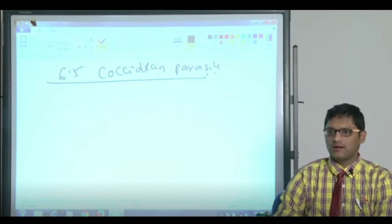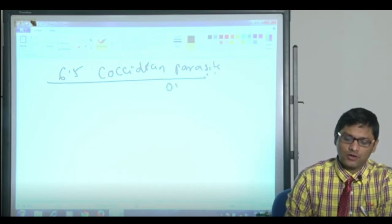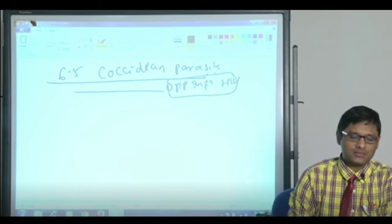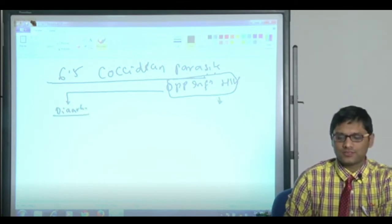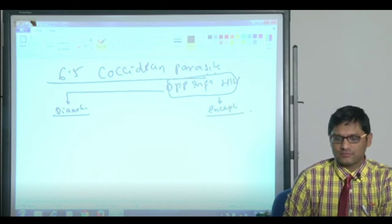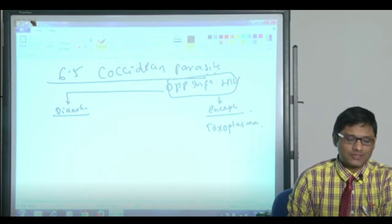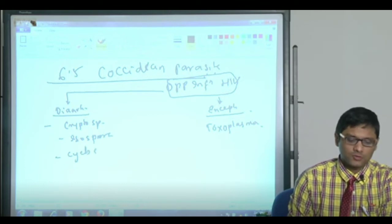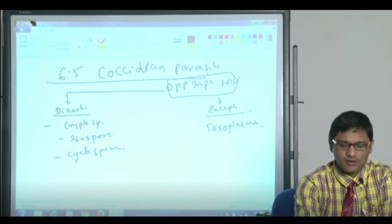There are four important members under this, and all these members are known to produce opportunistic infection in HIV patients. Among these, three members cause opportunistic diarrhea, whereas one causes opportunistic encephalitis infection. Opportunistic encephalitis is caused by Toxoplasma, whereas diarrhea is caused by Cryptosporidium, Isospora, and Cyclospora. These are the important members of coccidian parasites.